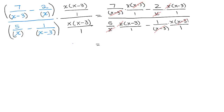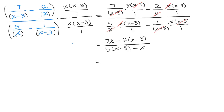So what do we have left in the numerator? I have 7 times x, so 7x, minus 2 times (x minus 3). You're going to have to distribute that negative sign. And in the denominator I have 5 times (x minus 3), minus 1 times x, which is x. So I have to distribute my negative 2, giving negative 2x plus 6.